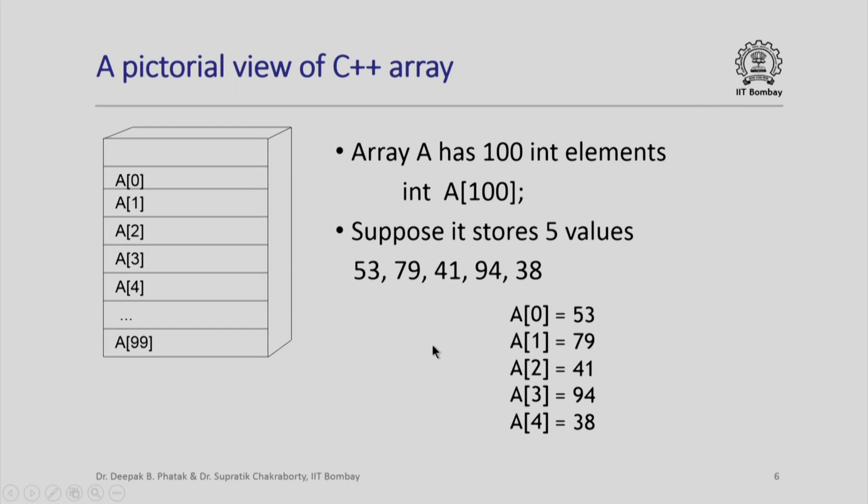At this point, please also note that the value 100 appearing in the declaration is not an index; it is actually the size of an array. This is prescribed only once in the declaration. Subsequently, whenever I write anything inside square brackets associated with the array name, it always means a particular element of the array.